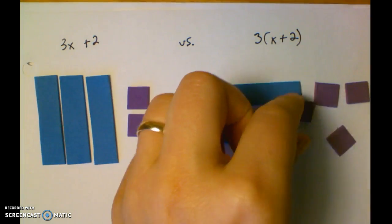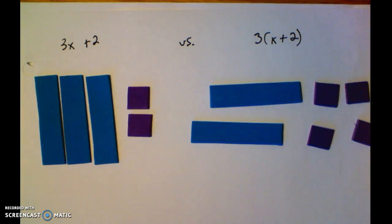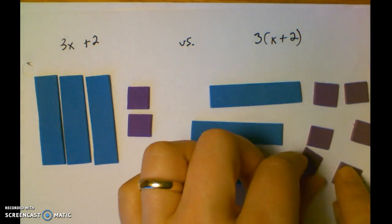Here's 2x plus 2s. And then here's the third x plus 2s.